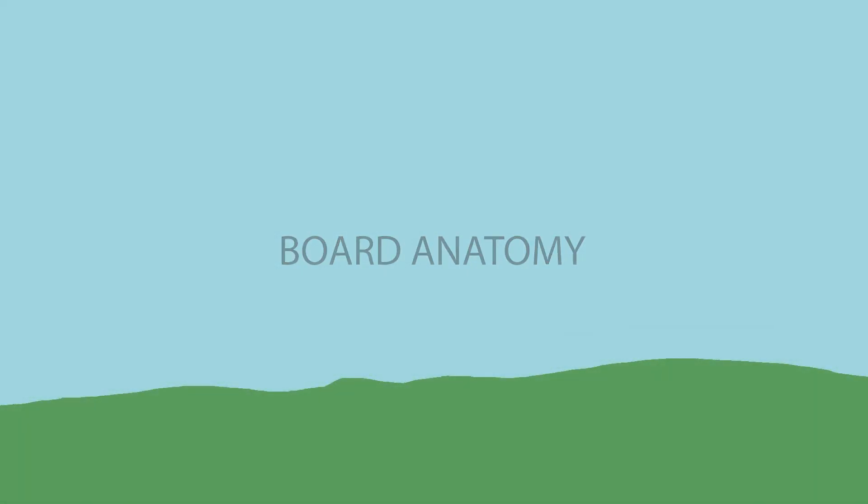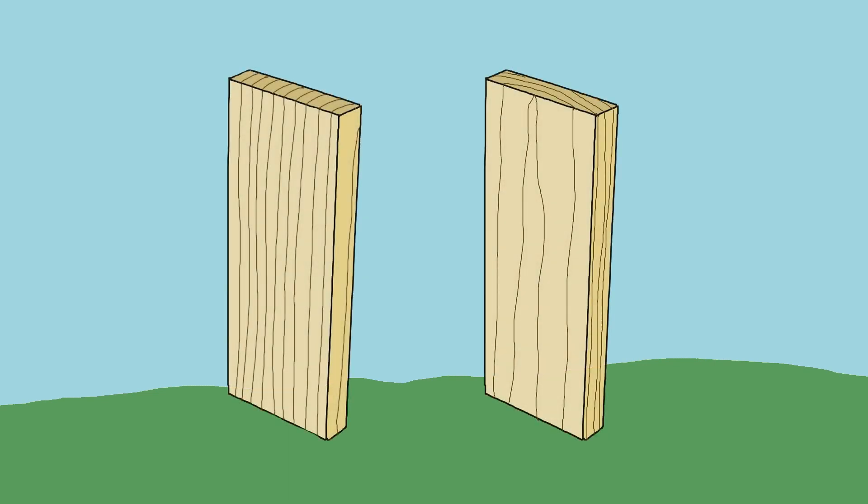How do we talk about a board? Here we have two boards. Most often the grain of a board runs from end to end in the longest direction, as is the case with these examples. Think of wood grain as bundled straws that water moved through from the roots to the leaves. The grain on the ends of a board is called end grain.